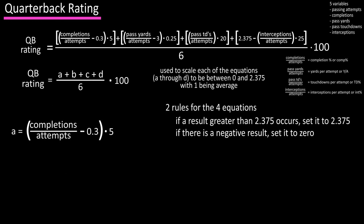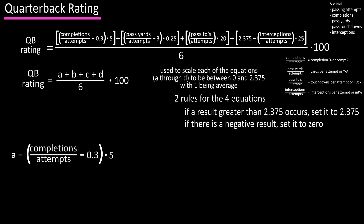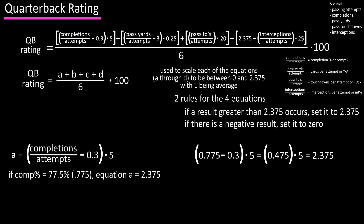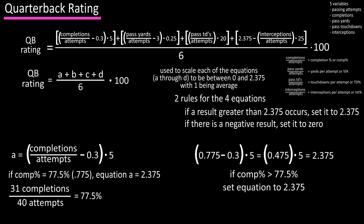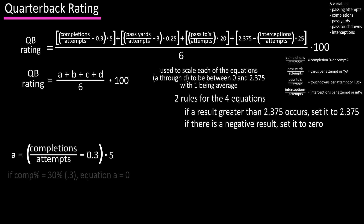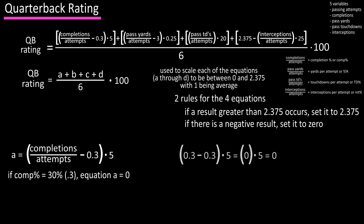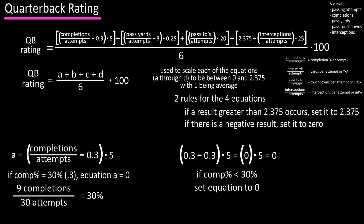To reach the upper bound of 2.375 in equation A, a quarterback needs a completion percentage of 77.5% — for example, 31 completions in 40 attempts. Any completion percentage greater than 77.5% would plug in as 2.375 in the main equation. To get zero in equation A, a quarterback would need a 30% completion percentage, such as 9 completions in 30 attempts. Anything below 30% gives a negative result, so equation A would be set to zero.